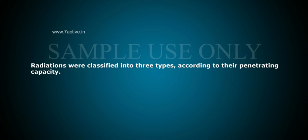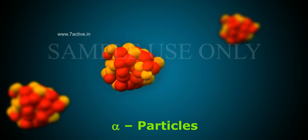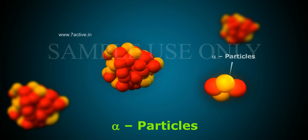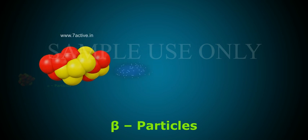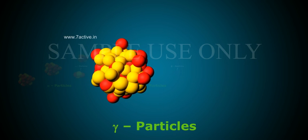Radiations were classified into three types according to their penetrating capacity: 1. Alpha particles, 2. Beta particles, 3. Gamma particles.